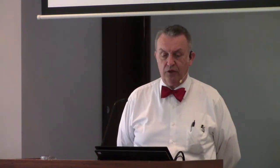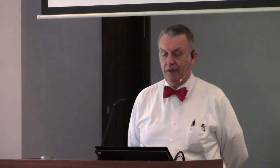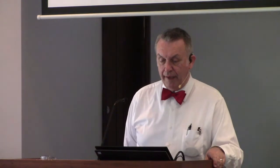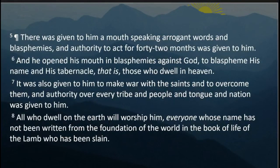This marks the high point of Satan's program — frequently attempted but will be realized in the future, albeit briefly. The tribulation is a very short time. He's only given three and a half years to be the total dictator of the world, according to the book of Revelation. Moving to verse 5: there was given to him a mouth speaking arrogant words and blasphemies, and authority to act for 42 months — again that three-and-a-half-year period. He opened his mouth in blasphemies against God, to blaspheme his name and his tabernacle, and those who dwell in heaven.